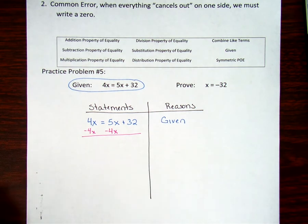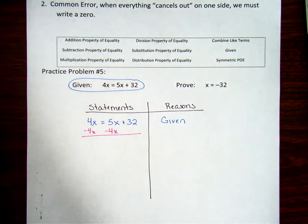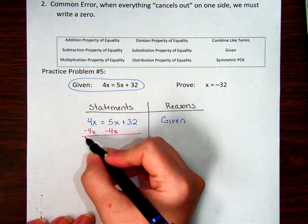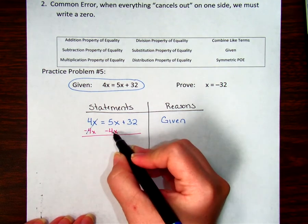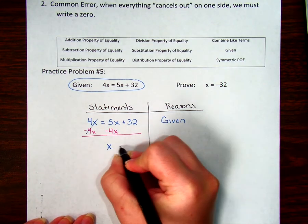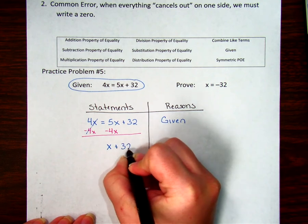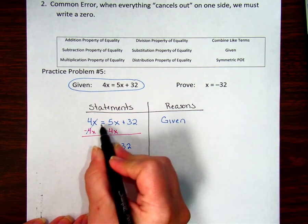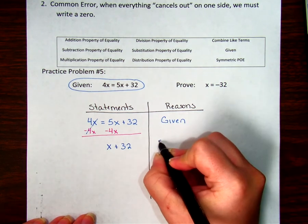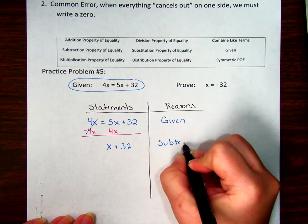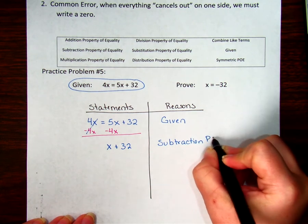When I do that, it's real tempting to go, okay, so that cancels out, and then 5X minus 4X is 1X plus 32. I subtract it on both sides of equals, so I used the subtraction property of equality.